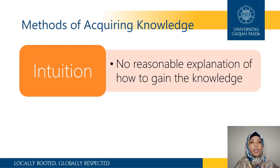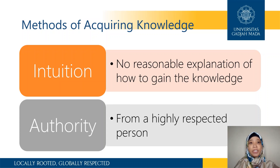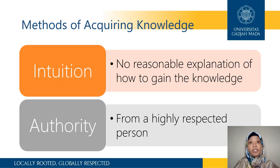The second way of acquiring knowledge is using authority. This is all the information and knowledge that we gain from someone else whom we consider very important in our life or whom we respect. For example, when we gain knowledge from our lecturers, professors, teachers, or someone else whom we respect, then we are using authority to gain that knowledge.